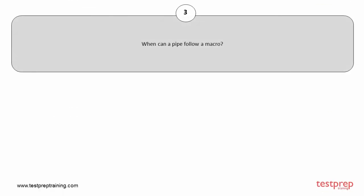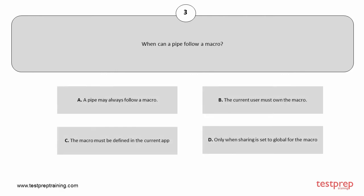Question number 3. When can a pipe follow a macro? Your options are: A. A pipe may always follow a macro. B. The current user must own the macro. C. The macro must be defined in the current app. D. Only when sharing is set to global for the macro. The correct answer is option A.